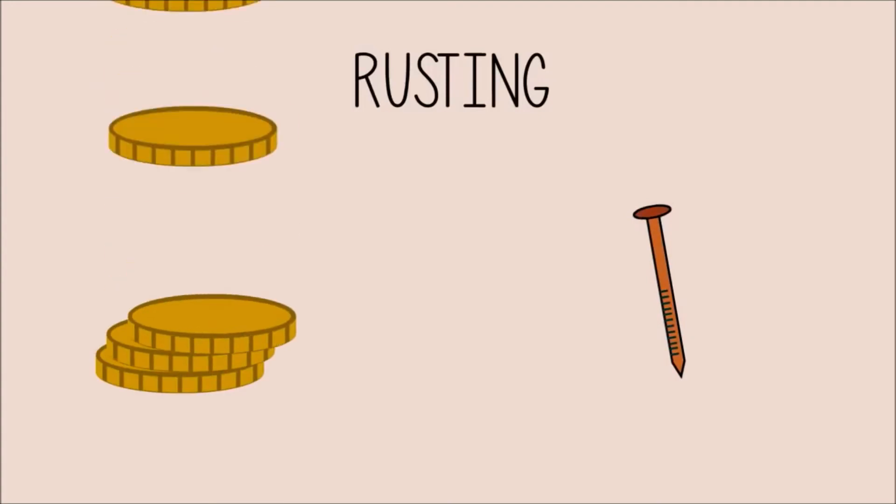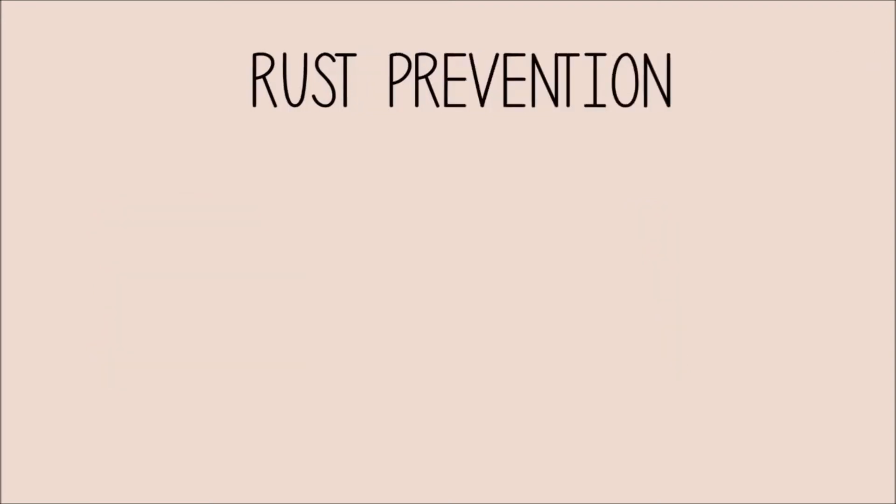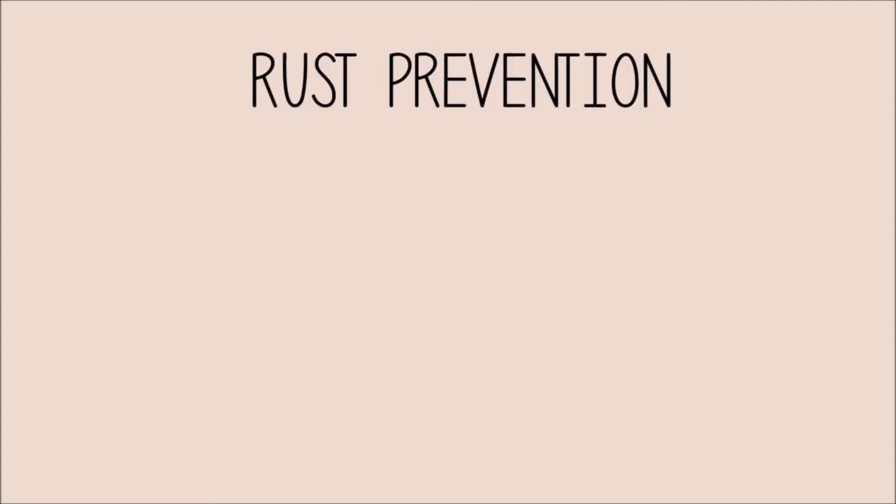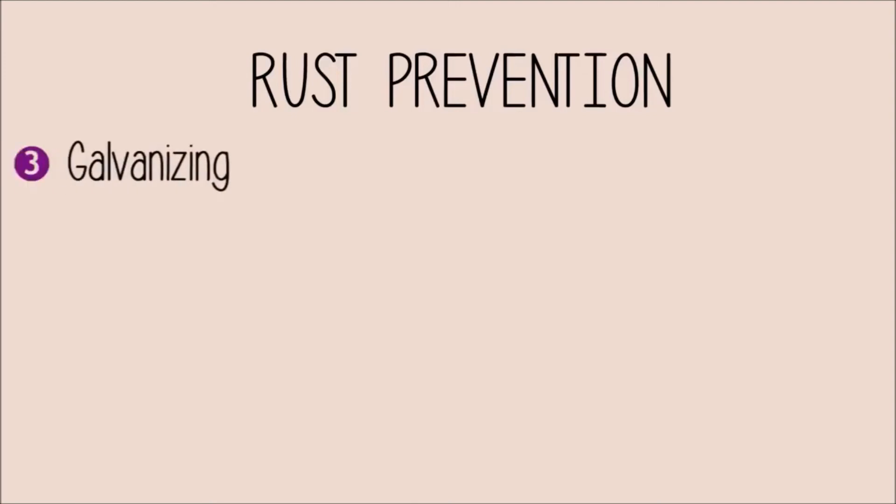Rusting can be very costly if we have to constantly replace these items made of iron and steel. Rust can be prevented if we paint the areas exposed to oxygen and moisture. This is done on many bicycles and cars. Another method to prevent rust is by placing a layer of oil or grease. This is done on many bicycle chains. It helps lubricate the moving parts, which reduces friction and slows down the rusting process. Another way to prevent rusting is a sacrificial protection method called galvanizing.